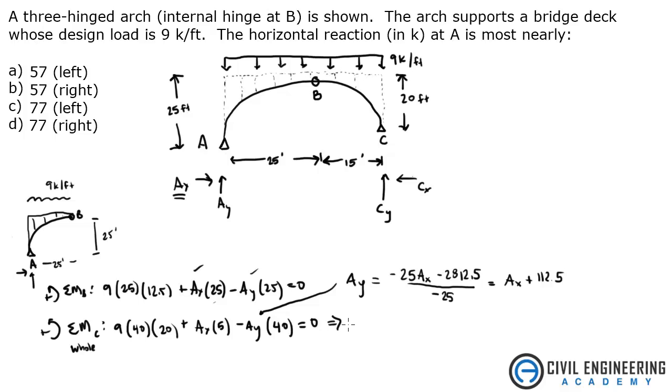So this gives me 7200 plus 5AX minus, and I'll put this whole thing in brackets and parentheses. That's AX plus 112.5, all multiplied by 40. Set that equal to zero, and solve it, and I get AX is equal to a positive 77.1 kips.